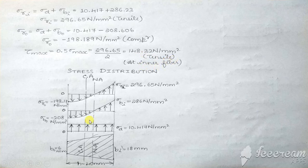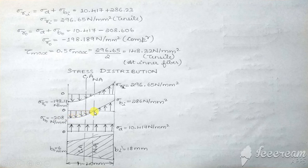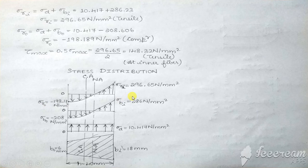Finally, we plot the stress distribution curve for the curved beam. Draw the curved beam with the centroidal axis, outer axis, and neutral axis marked. The direct stress, being tensile and positive, is marked above the zero line and is constant throughout the cross section. The bending stress at the outer fiber is compressive, plotted below the zero line, while at the neutral axis the bending stress is zero. The bending stress at the inner fiber is tensile, plotted above the zero line. The resultant stresses at the outer and inner fibers are then plotted similarly. Note that this is a curve, not a straight line, because it is a hyperbolic stress distribution in the case of a curved beam.